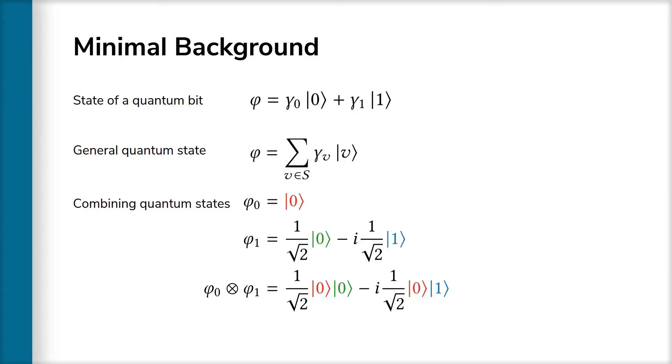We can combine quantum states using the tensor product. Here we show two example states phi 0 and phi 1, whose composite state is shown below.